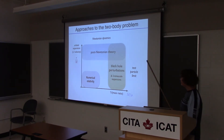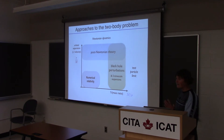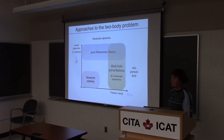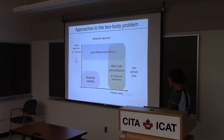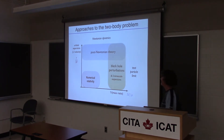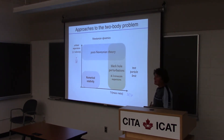A method that also has access to the strong field regime are black hole perturbations, which are valid for extreme mass ratio systems. They are perturbations on top of the test particle limit and give full access to relativistic effects in that regime. And of course there is numerical relativity, which can do any type of relativistic effect for fairly comparable masses.